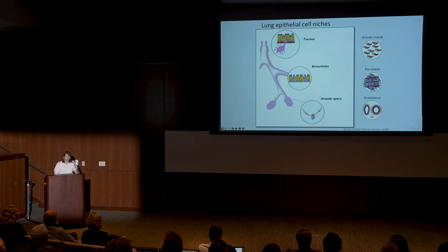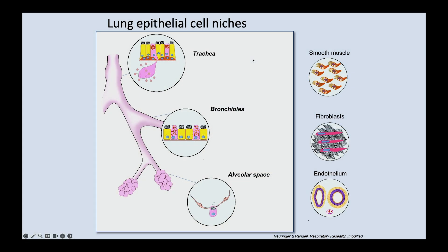So how do we approach answering these types of questions? Well, first, we have largely used mouse models, and we'll touch on human at the end of the talk. Within the mouse pulmonary system, there are at least three major niches where epithelial cells reside, and each of these has its own identified residential progenitor cells. So we can think about the trachea, the bronchioles or airways, and the alveolar space as being unique niches for these different epithelial cell types.